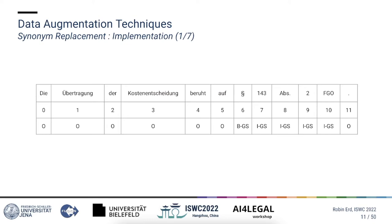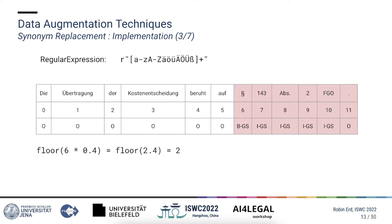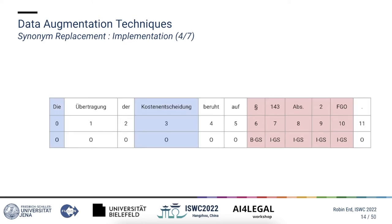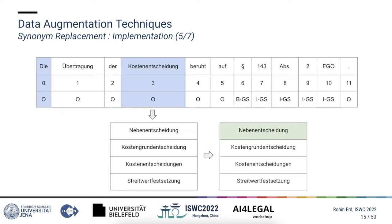First we want to find out which tokens are eligible for replacement. We exclude all tokens that belong to an entity, highlighted in red, and we also exclude all tokens that don't match the regular expression on the slide. This excludes tokens that don't exclusively consist of groups of letters, assuring that we don't try to replace for example punctuation marks. From the remaining tokens we take the desired percentage — in this case 40% — and randomly select tokens to be replaced. In this example we will be replacing 'die', 'kosten', and 'schaden'. We then query the selected replacement source with the original token to get a list of possible replacements. We filter this list with the same regular expression and replace the token with the highest ranked remaining token. In this case none of the candidates gets filtered out, so 'nebenentscheidung' is the final replacement.